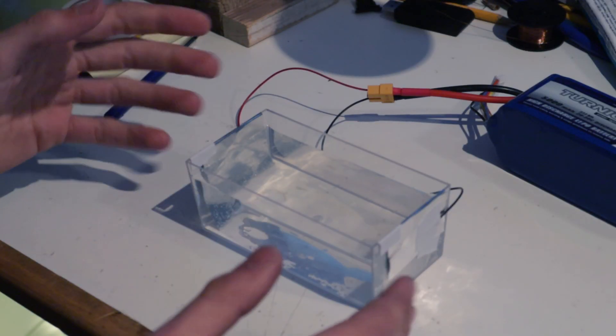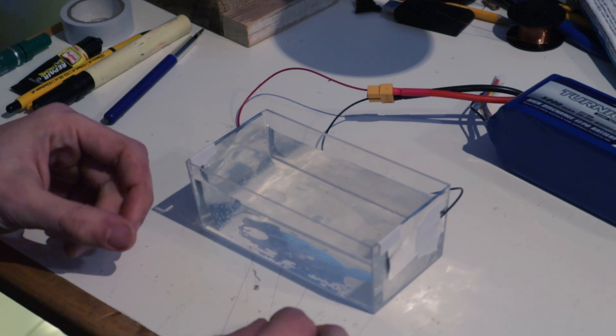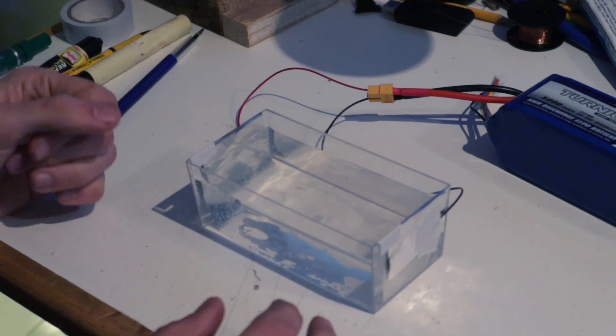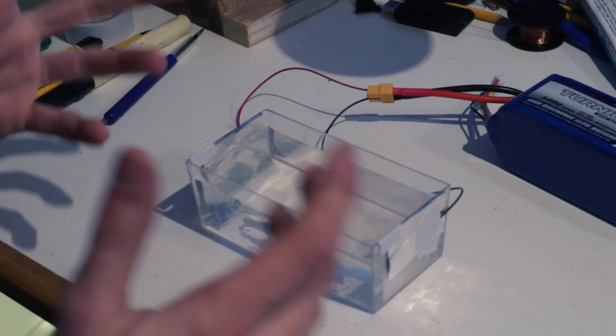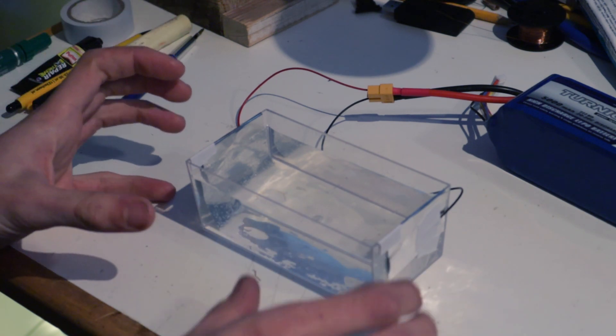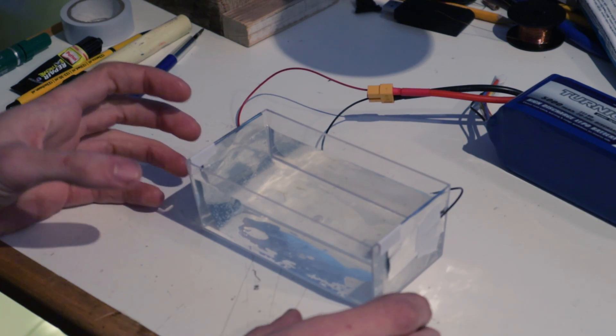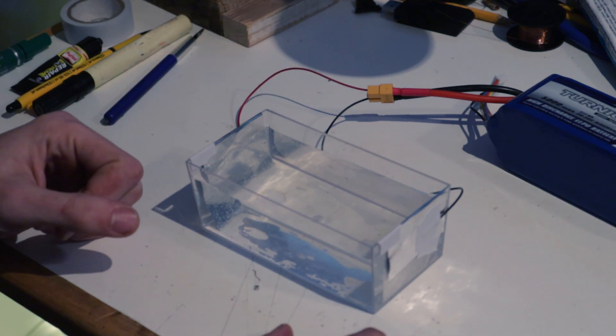Now of course, this electrolyzer is producing hydrogen and oxygen, but we have no way of actually capturing it. So in an actual electrolyzer, it's built in such a way that we can then take this hydrogen away and store it in a tank, and the same thing goes for the oxygen.